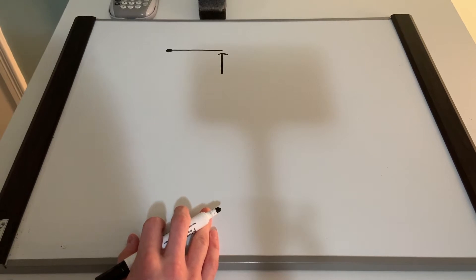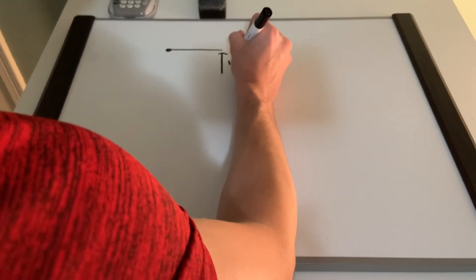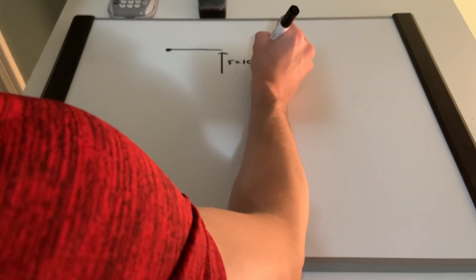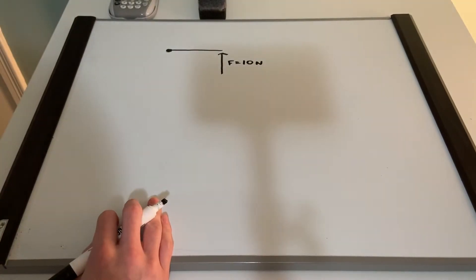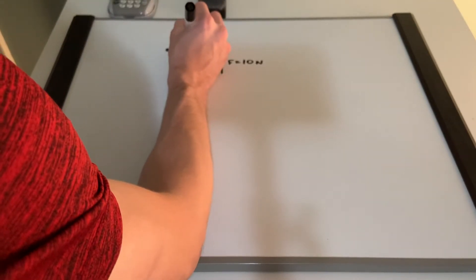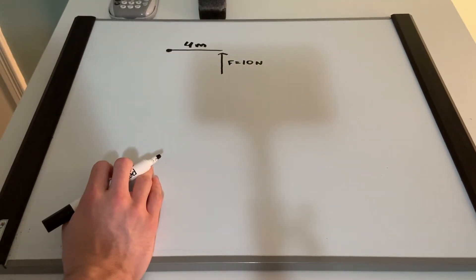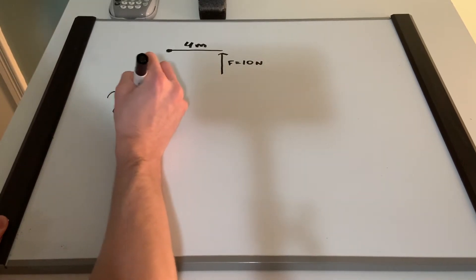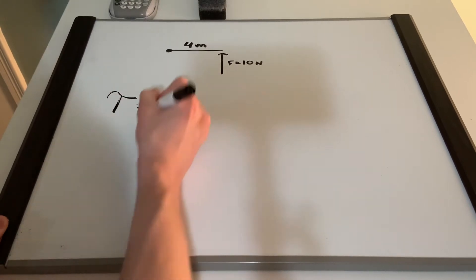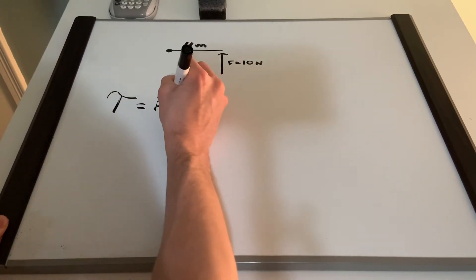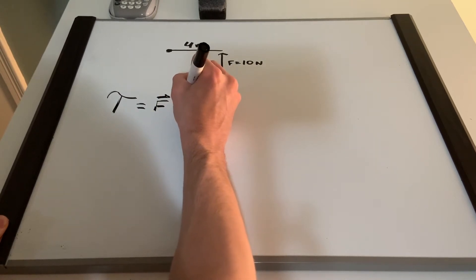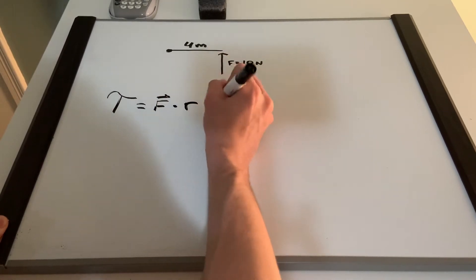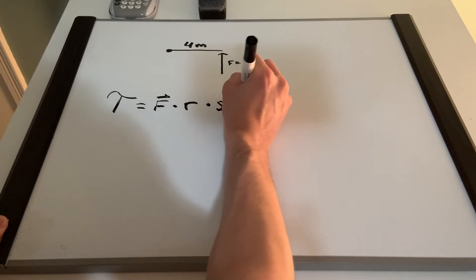It tells us that this force is equal to 10 newtons, and it also tells us that the length of this rod is 4 meters. So we use this information to figure out how much torque we have. We know that the formula for torque is equal to our force times our radius times sine of the angle between those.